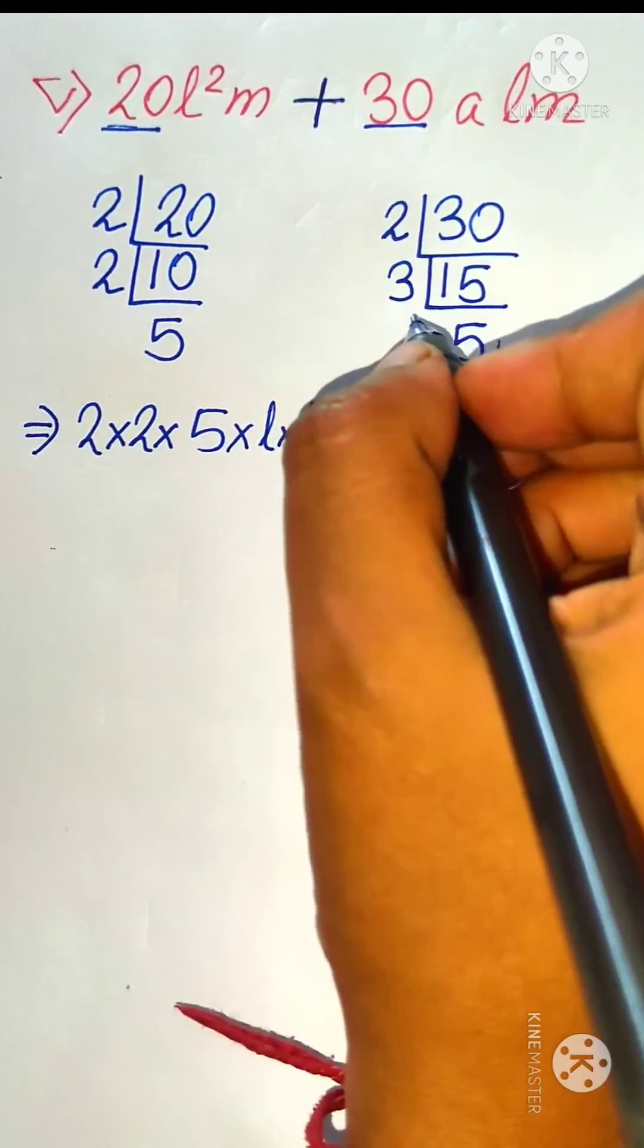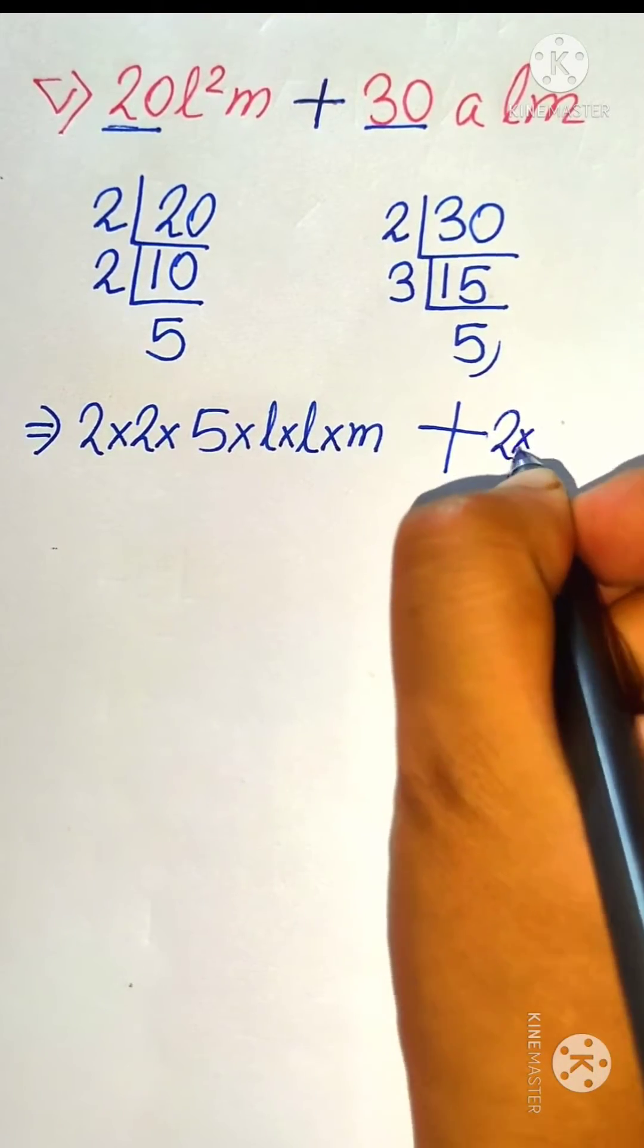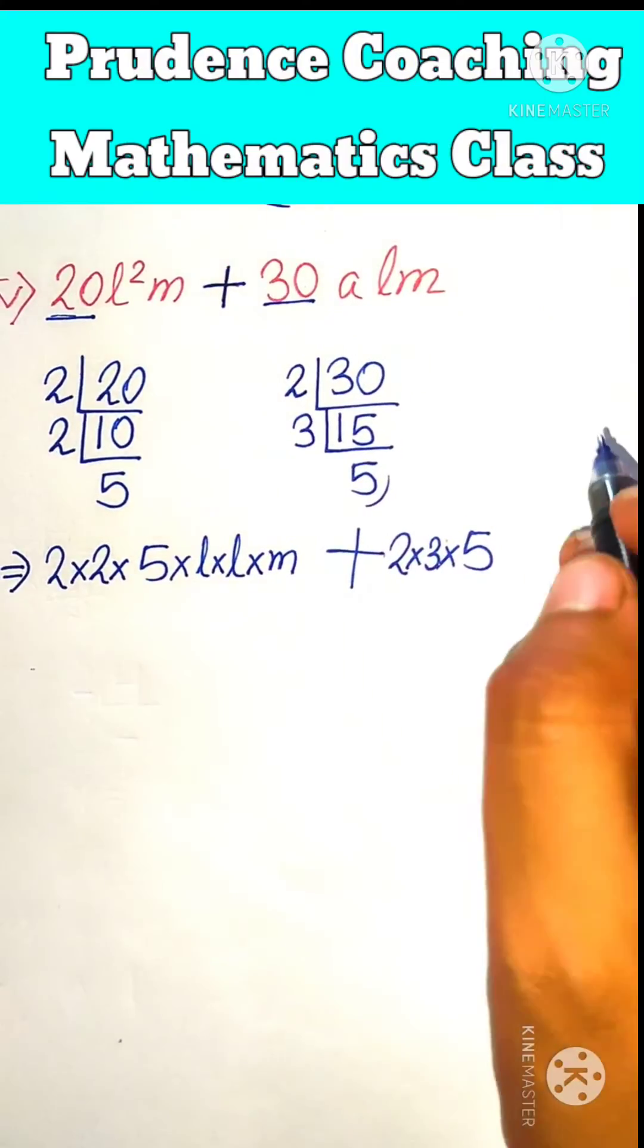In place of 30, we can write 2 times 3 times 5. So write here 2 times 3 times 5. Next we have a times l times m.